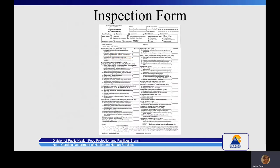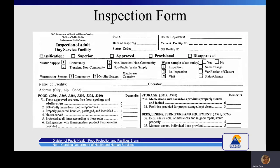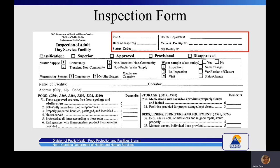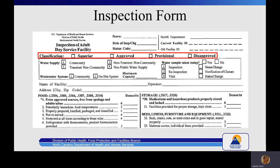Now we're going to highlight different sections of the inspection form in further detail. The top section is where we put the score at the end of the inspection, the date, the status code, health department, and the current facility ID number. The classification type will be based on the inspection and will be discussed further near the end of this presentation. This section also includes water supply information, wastewater info, whether a water sample was taken, the purpose of the visit, and the maximum capacity, which is especially important for on-site systems.